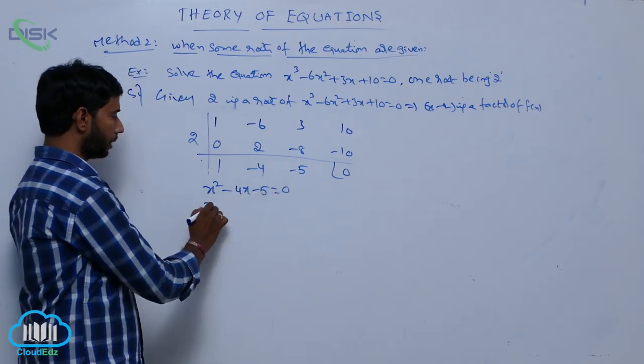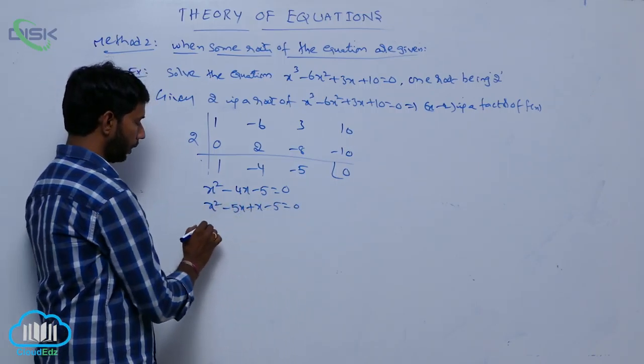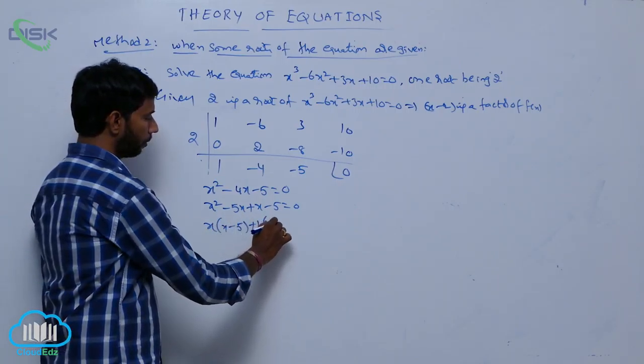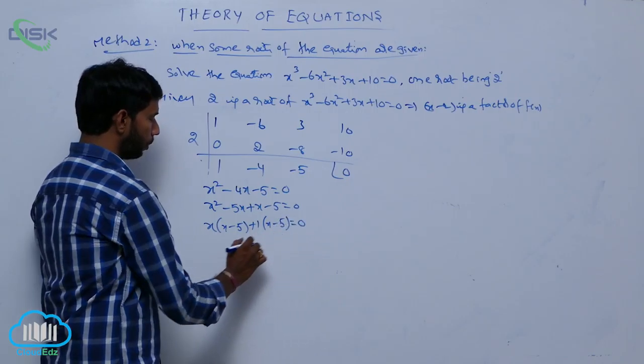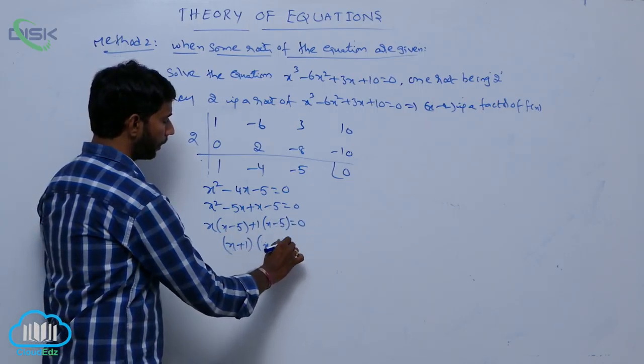Write the factors: that is x² - 5x + x - 5 = 0. Here x is common, x(x - 5) + 1(x - 5) = 0, that is (x + 1)(x - 5) = 0.